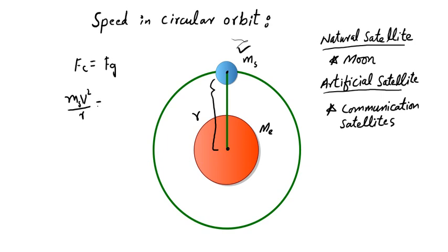The gravitational force between the two bodies is G·ms·Me divided by R². We can cancel ms from both sides, and one R cancels out as well.